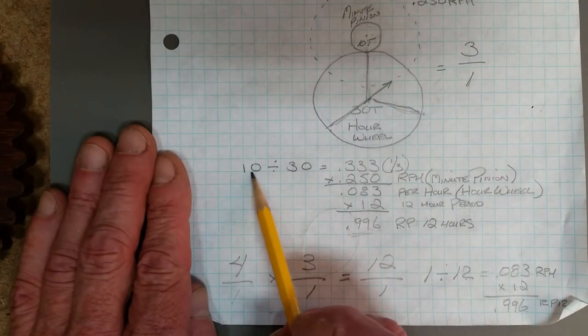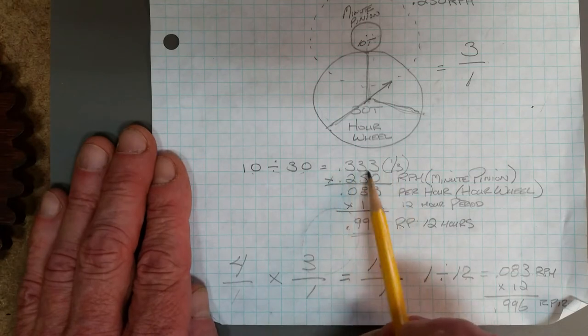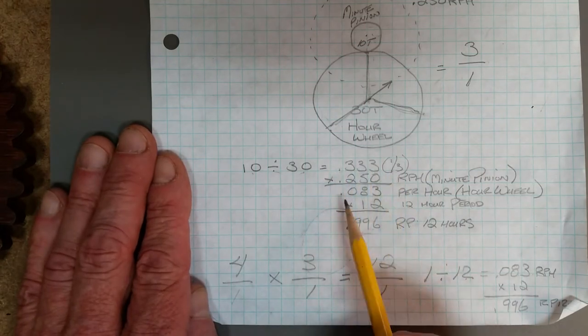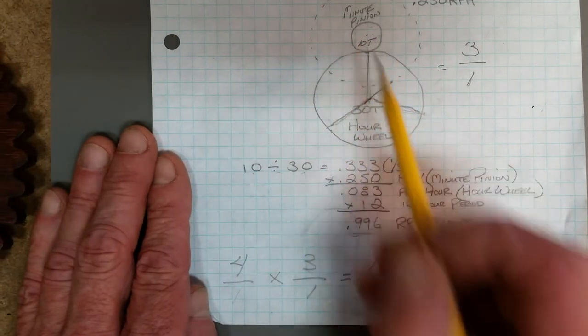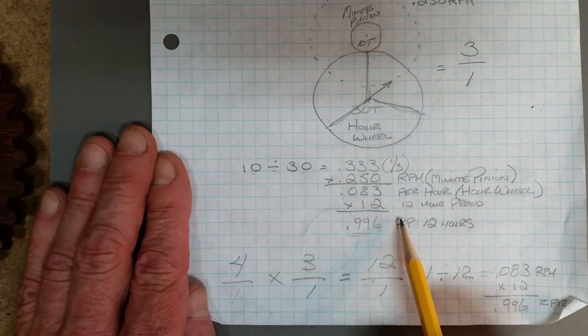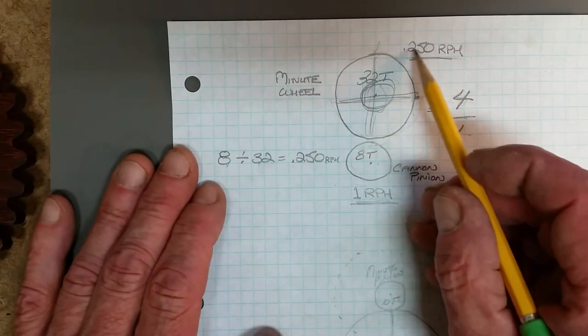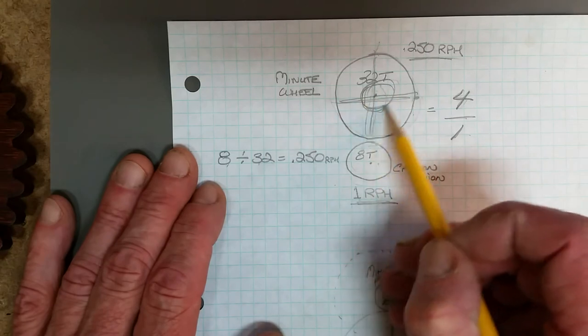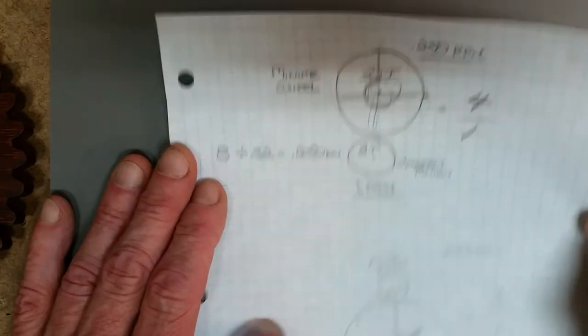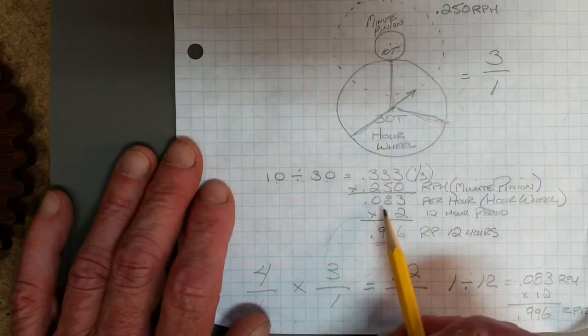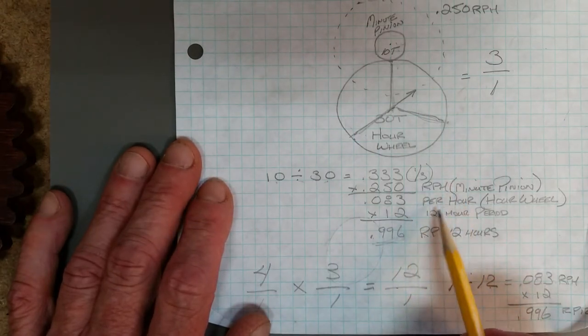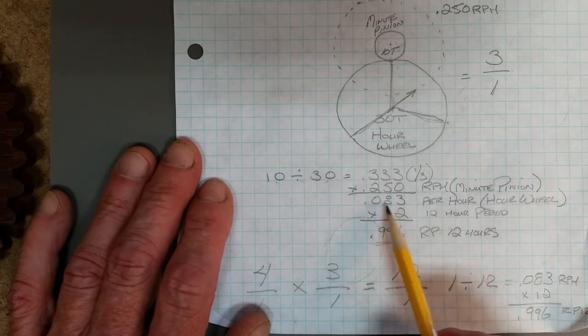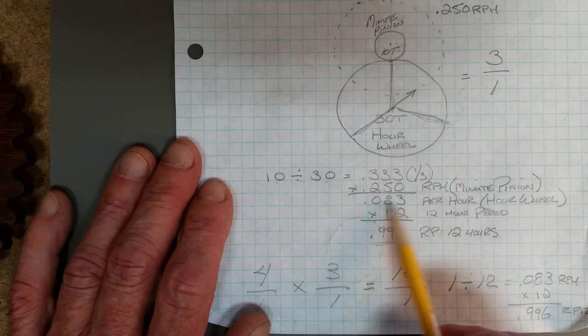We can divide 10 by 30 and we can prove that it's going around one third of the way: 0.333. Now if we want to find out what the speed is of this hour wheel, we need to multiply that by the speed of the pinion that's driving it. We discovered that this wheel here is going at 0.250, so therefore the pinion which is attached to it is also going at 0.250. We multiply those together and we get 0.083.